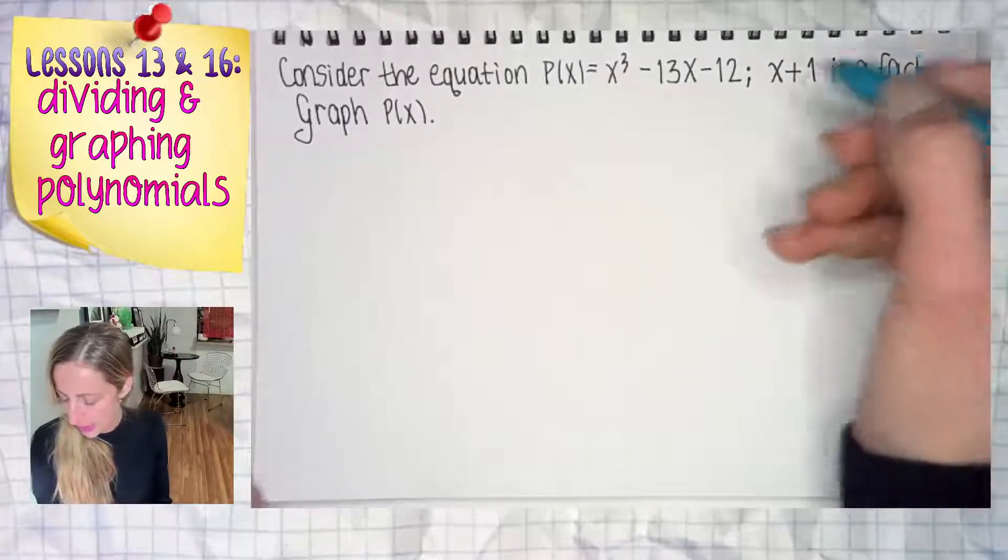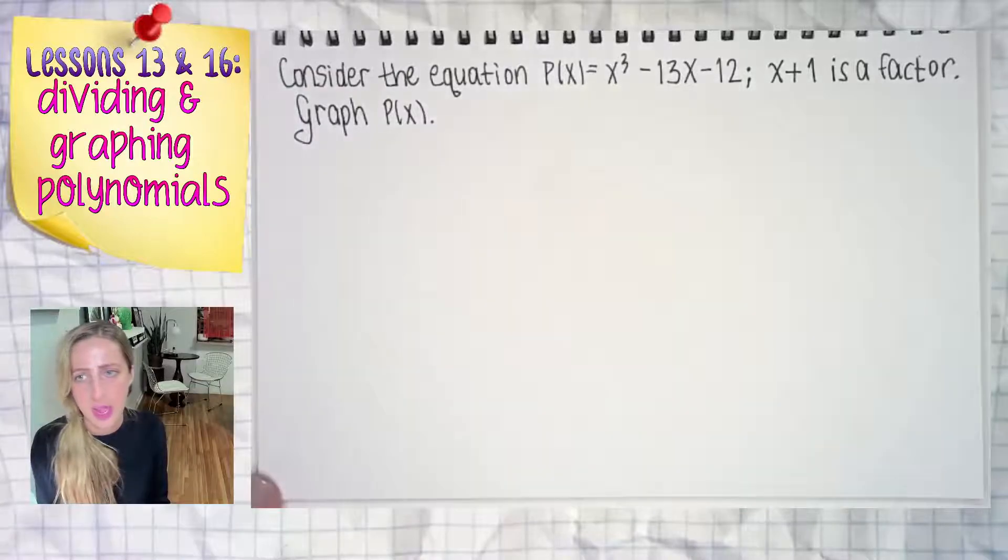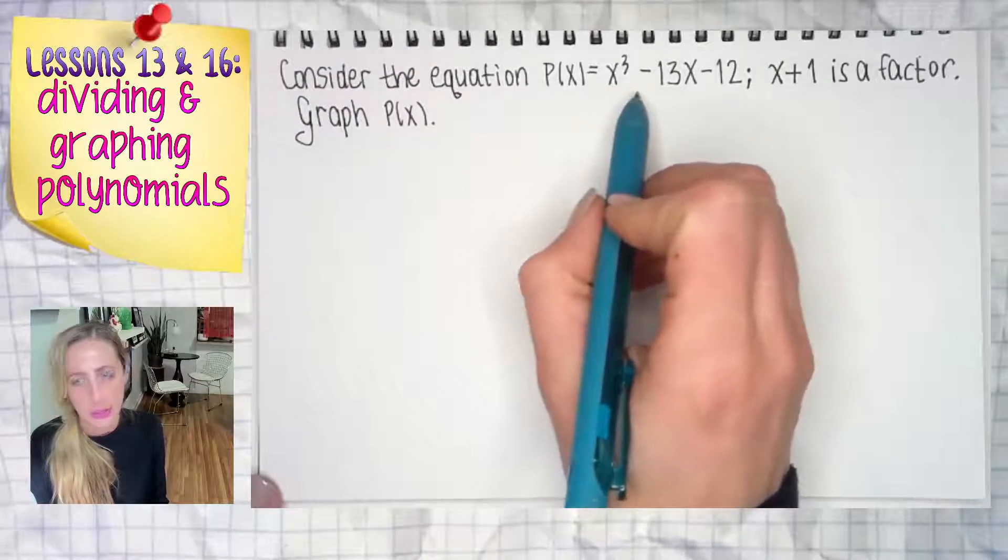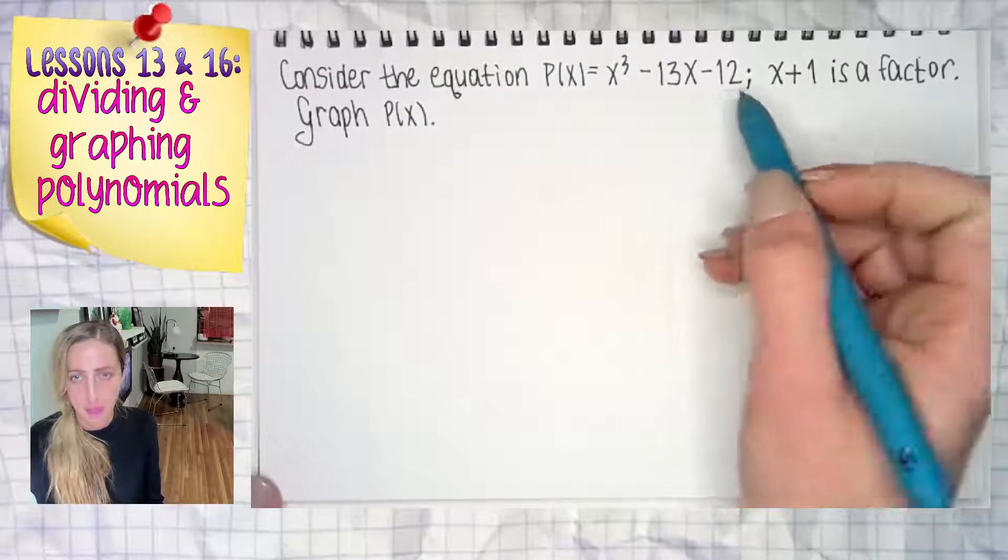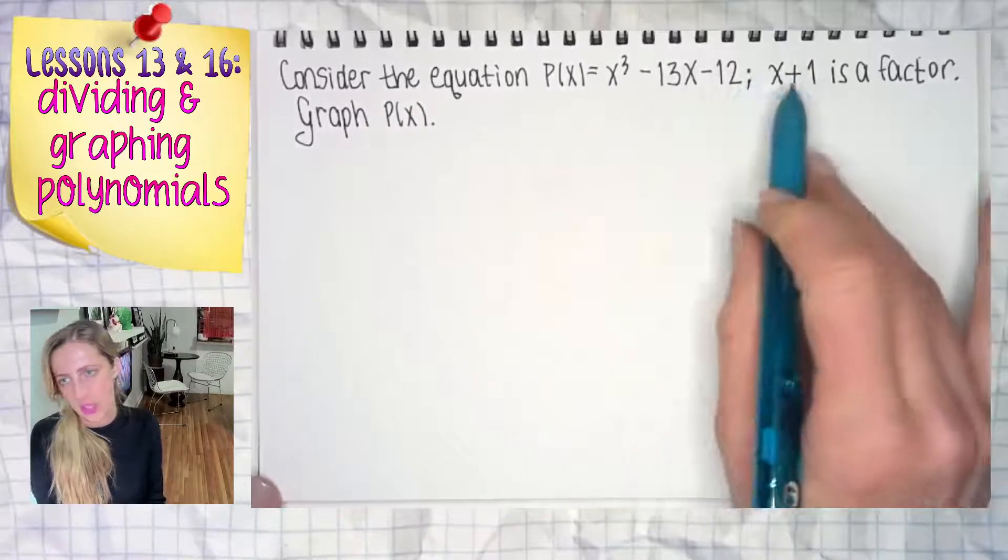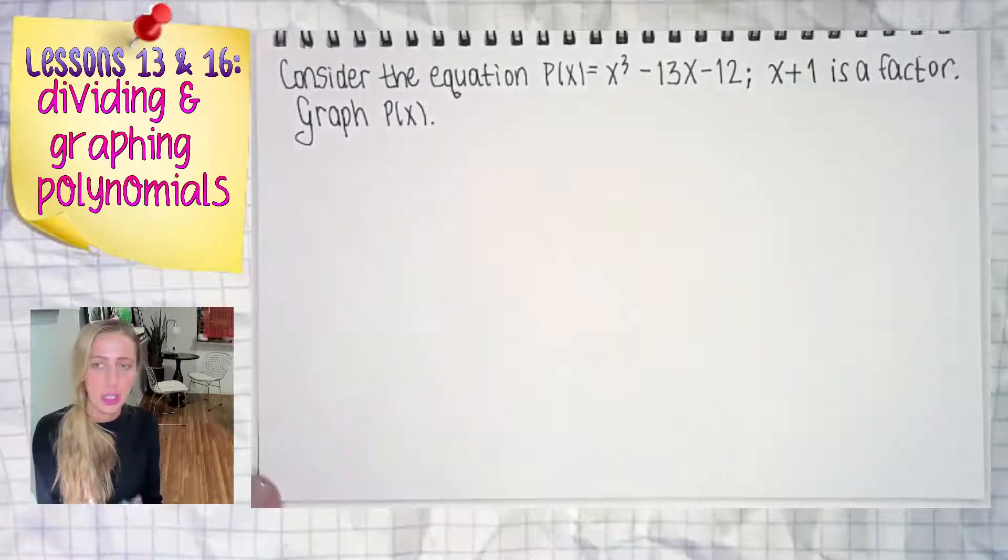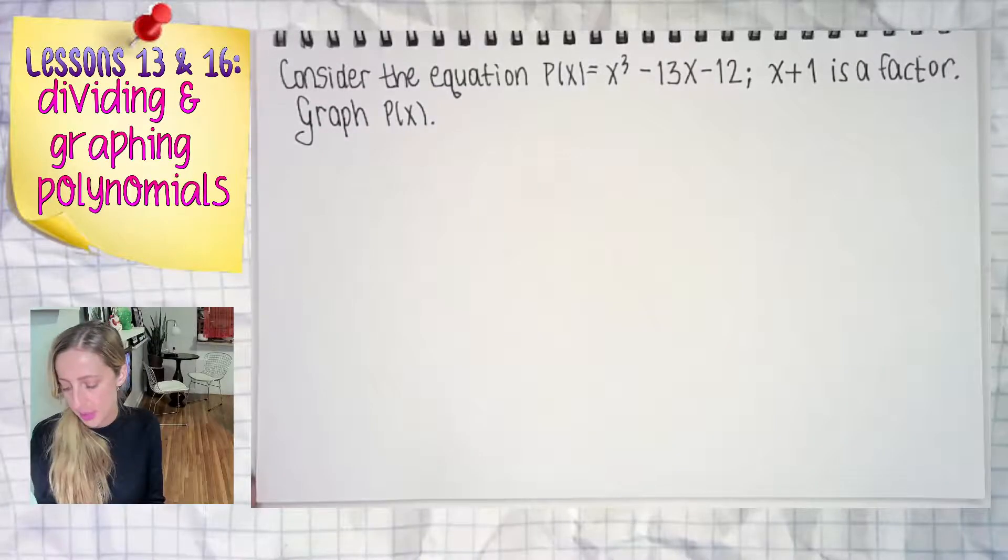Here we go with another example right here and we have P(x) and it is x to the third minus 13x minus 12. And we want to consider this equation such that x plus one is a factor. That's your big fat clue. Why is that a big fat clue?